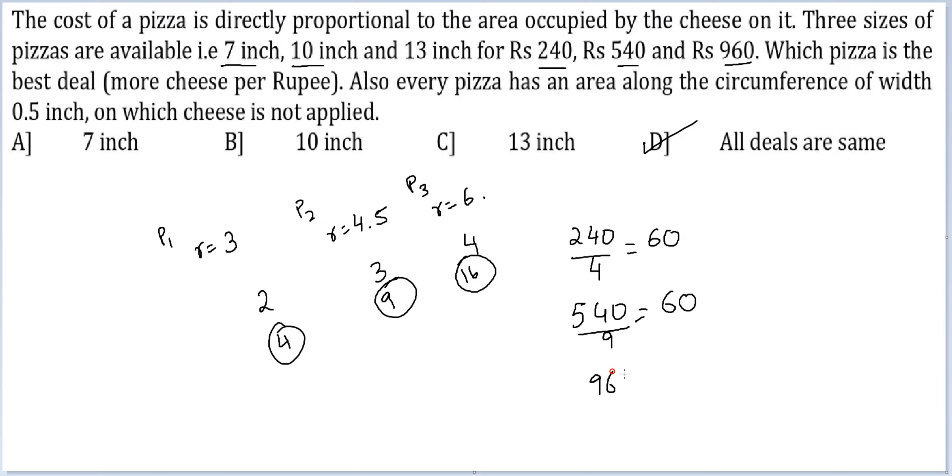Or it could be 960 by 16. This is also equal to 60. Yes, the answer should be D. I jumped the gun. It could very well have been not the first two. It could be the third one. But as it turns out, all three are same. So I mark this.